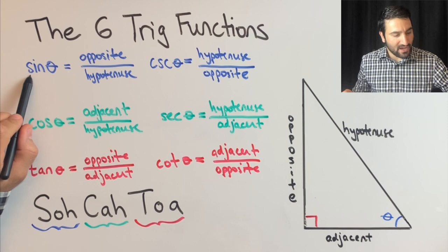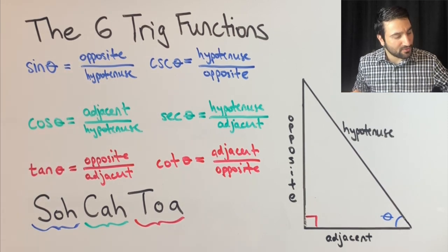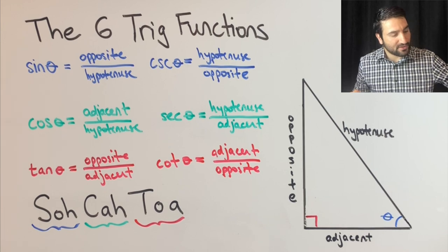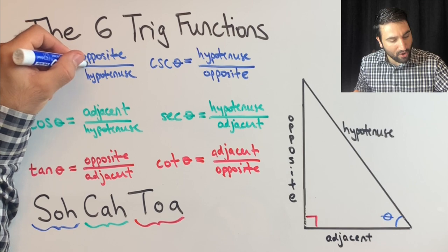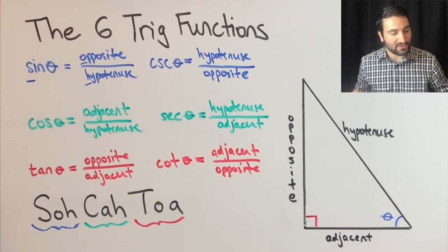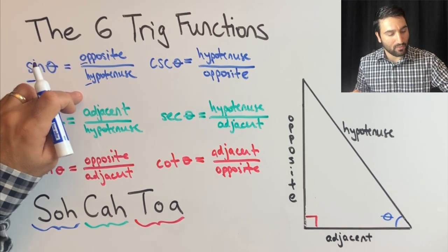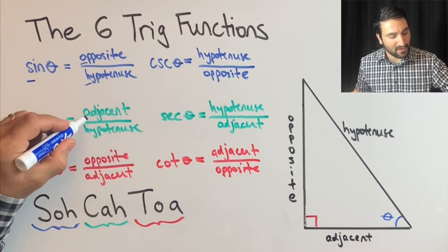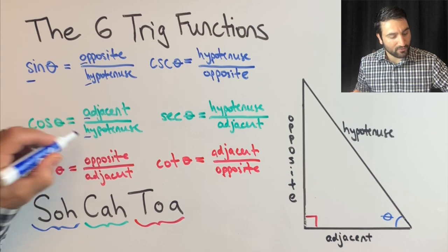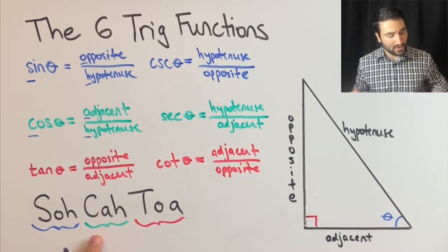SOH CAH TOA is the abbreviation for - if you see, sine is equal to opposite over hypotenuse, that's going to use the letters S, O, and H. S-O. Cosine is going to be cosine adjacent over hypotenuse, C-A-H.